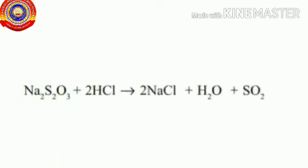Now see the equation. Na2S2O3 sodium thiosulphate plus 2HCl hydrochloric acid gives 2NaCl sodium chloride plus H2O water plus SO2 sulfur dioxide plus S sulfur.